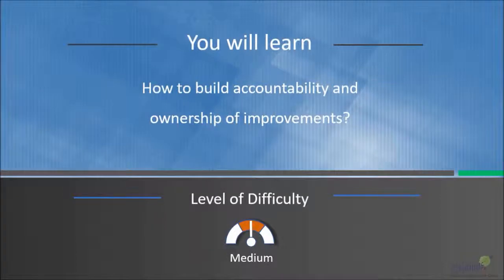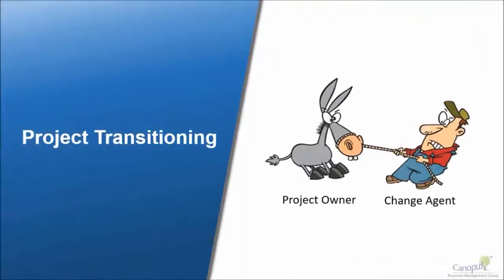In this lecture we will learn how to build accountability and ownership of improvements. We have come to the stage where we have implemented the solutions and we want to transition the project to the project owner. You as a change agent have done your job — you have made sure that the improvement has been implemented and you want to hand it over to the person who owns the process and move on.